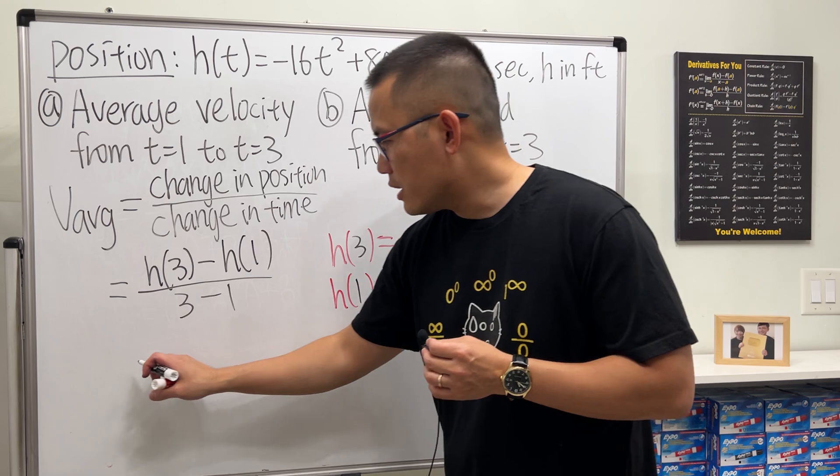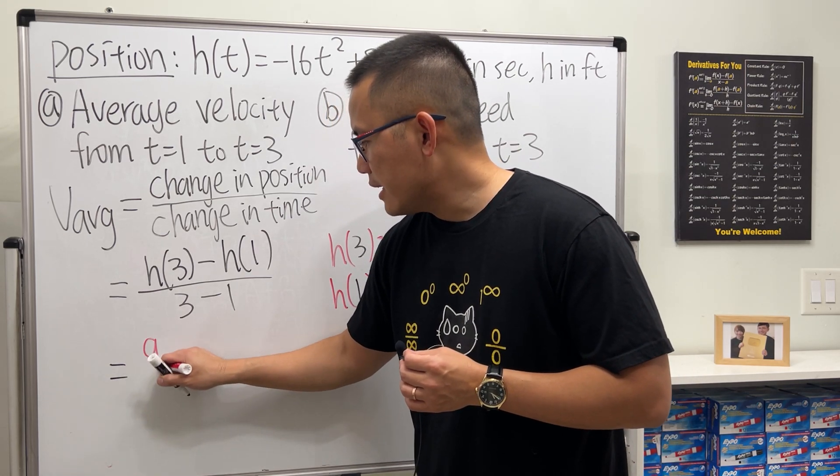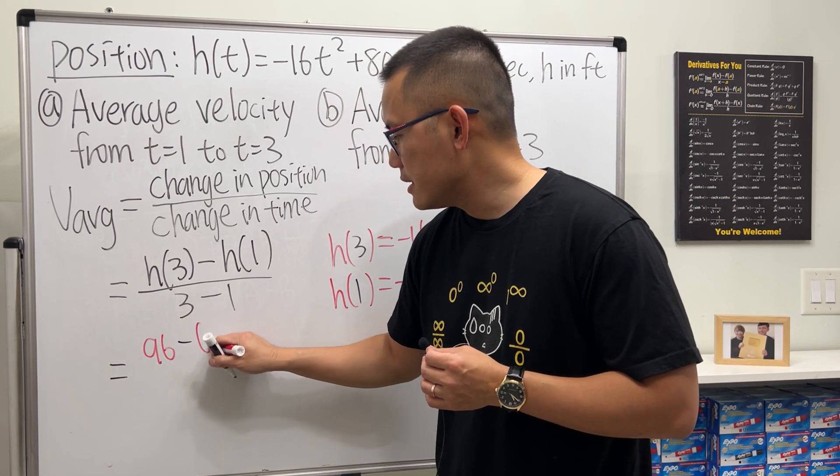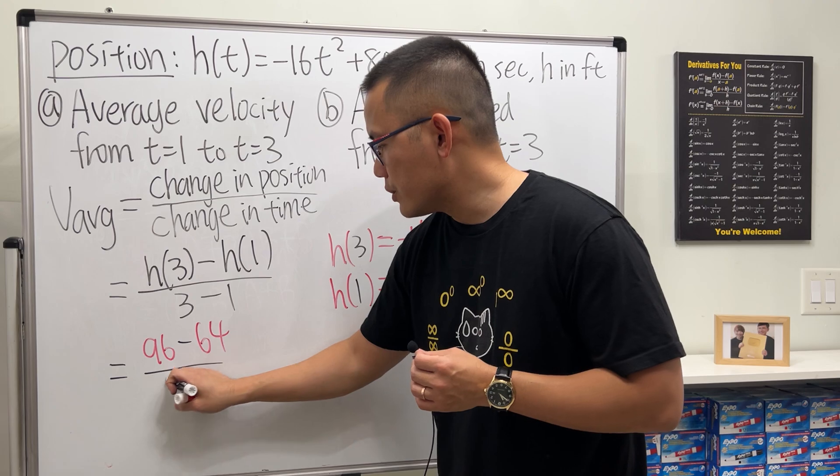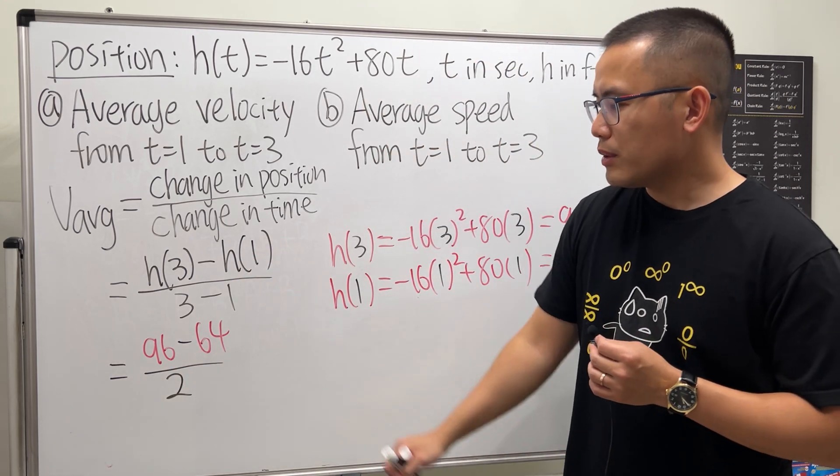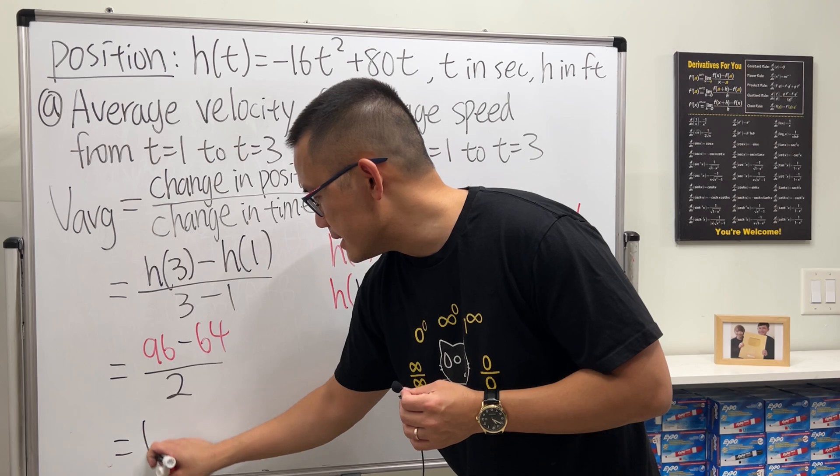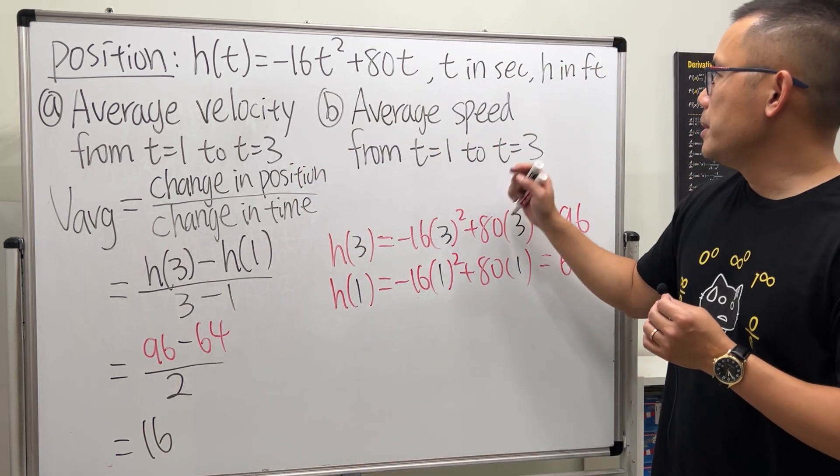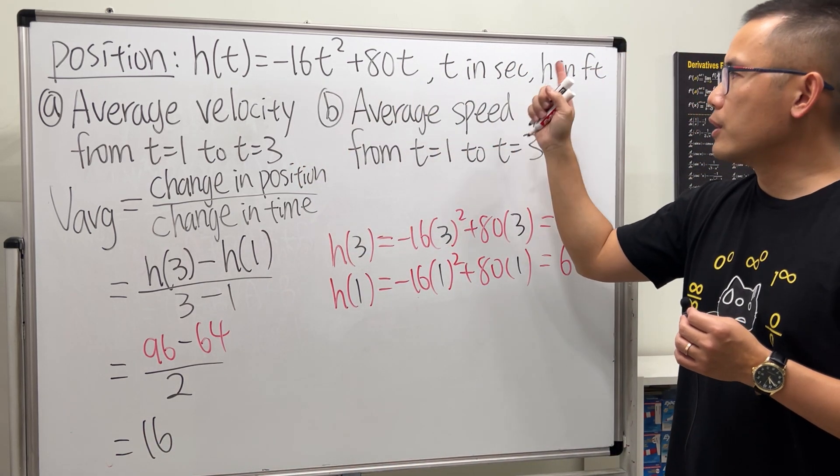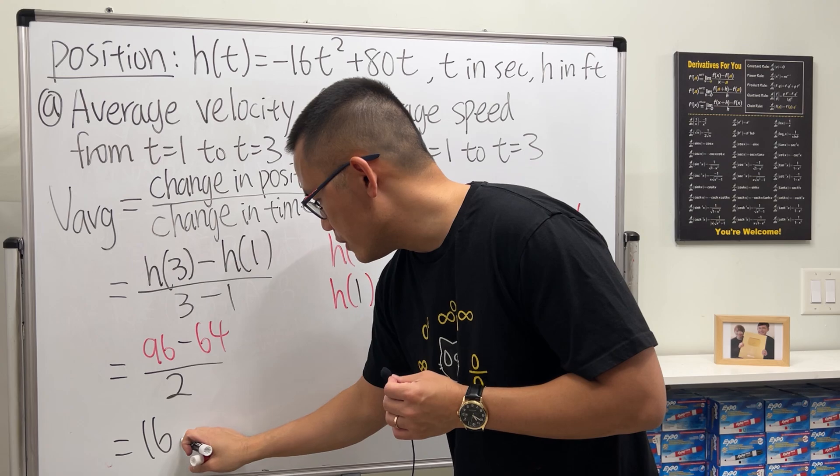So right here we just have to do 96 minus 64 over 2, and then work that out we get 32 over 2 which is 16. And keep in mind of the units, we have feet per second for the average velocity, and that will do it.